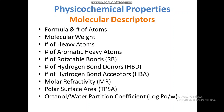First, we will discuss physico-chemical properties or molecular descriptors. Molecular descriptors include the molecular formula — what kind of atoms are present in our compound like carbon, hydrogen, nitrogen, and oxygen — and the number of atoms. Molecular weight also matters. We will discuss the ideal molecular weight for a drug-like compound, as well as number of heavy atoms, aromatic heavy atoms, rotatable bonds, hydrogen bond donors, and hydrogen bond acceptors.